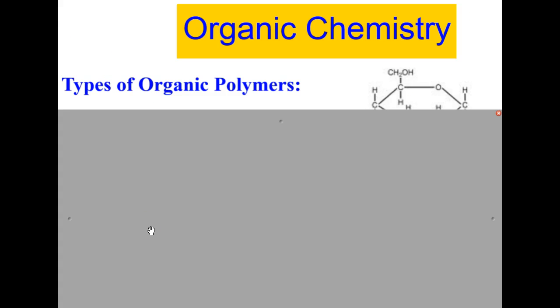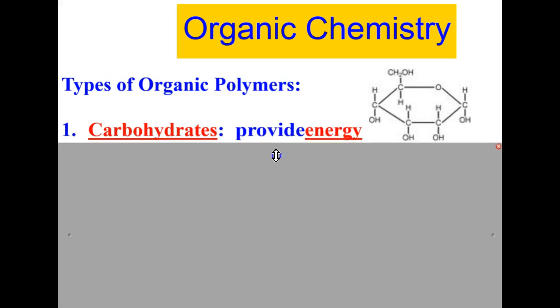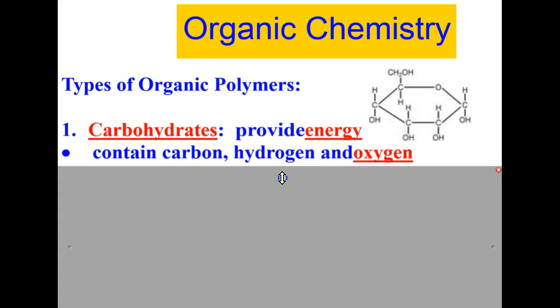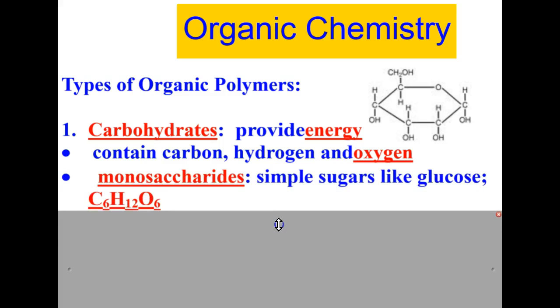Now let's take a look at different types of organic polymers and their usefulness to living things. We're going to start off with carbohydrates. The main function of carbohydrates is to provide energy. Carbohydrates contain carbon, hydrogen, and oxygen. There are two types of carbohydrates - monosaccharides, which are simple sugars like glucose, and the chemical name for glucose is C6H12O6.